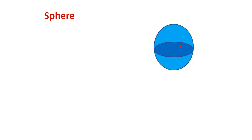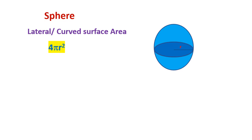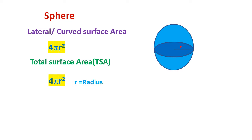Sphere: curved surface area 4 pi r square, total surface area 4 pi r square, where r is radius, volume 4 by 3 pi r cube.